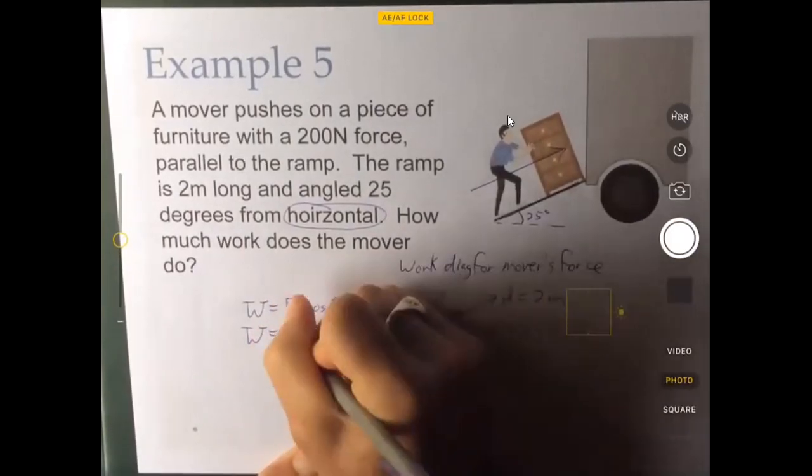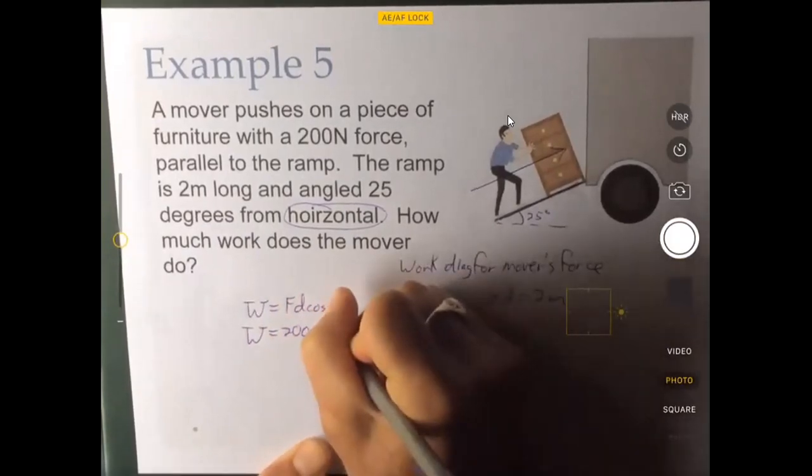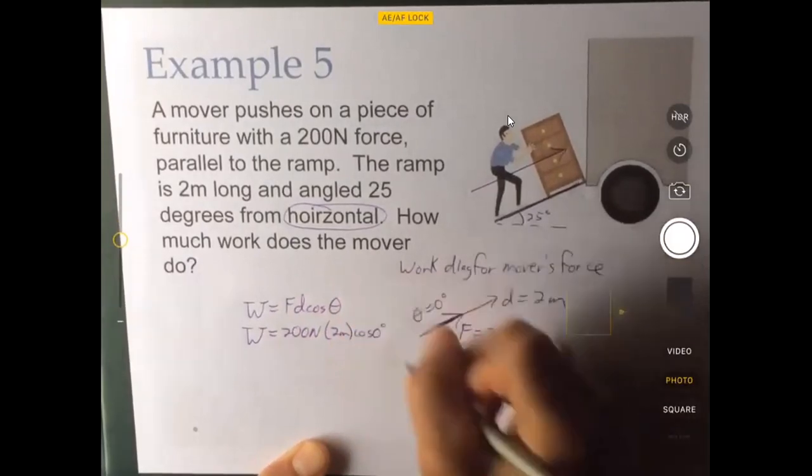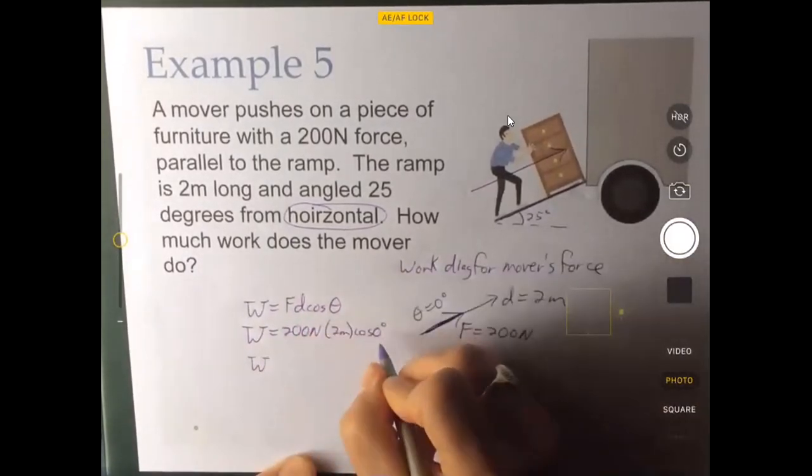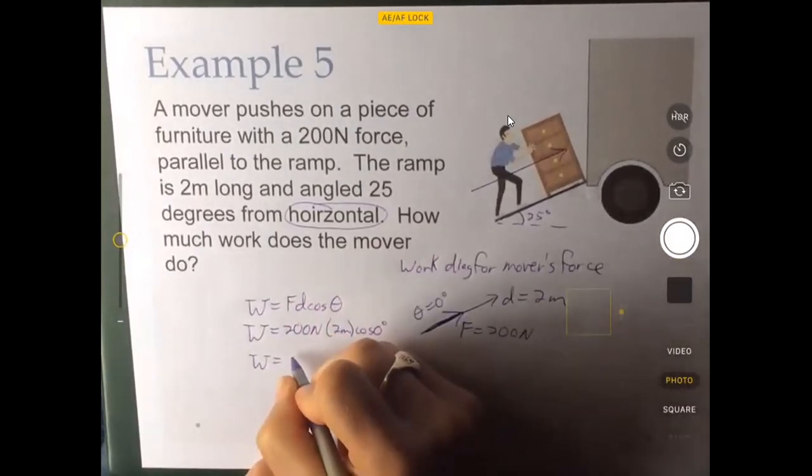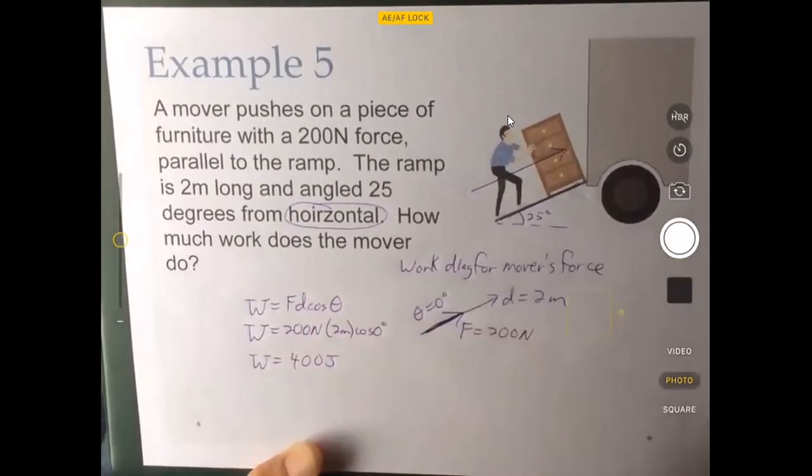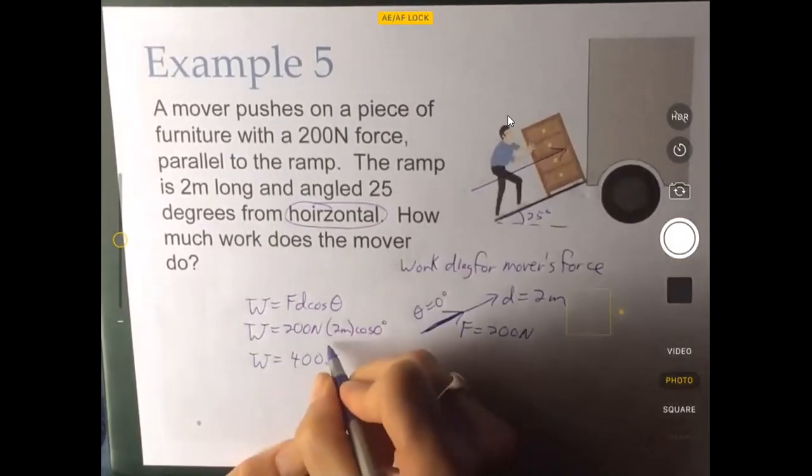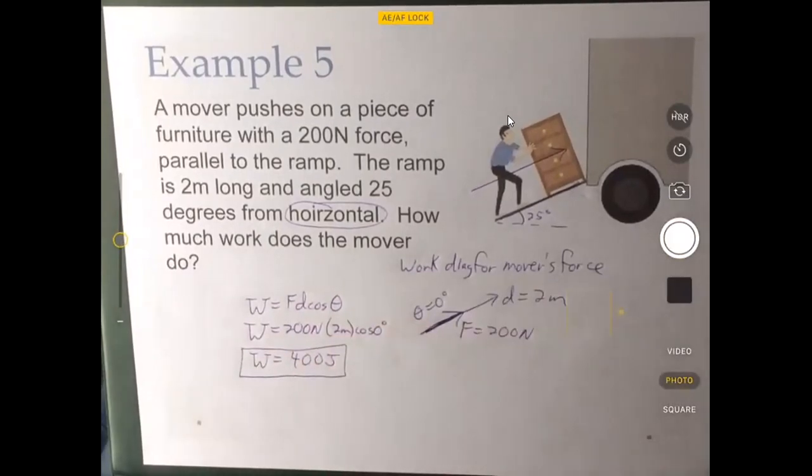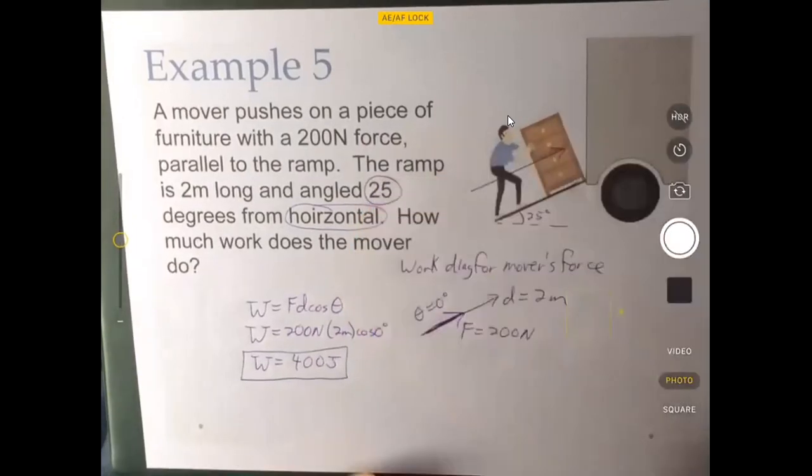The work is equal to 200 newtons times two meters times the cosine of zero degrees. Remember cosine of zero is one. And you don't have to remember that. But you may. And it's helpful to know. Just because it's this idea that that's the most work you can get is if you apply the force in the same direction as the displacement. And so that is a work of 400 joules.